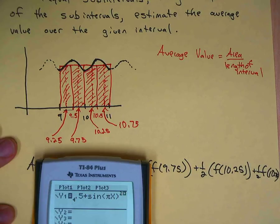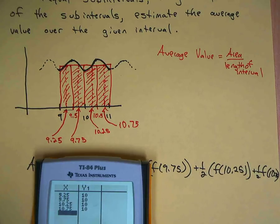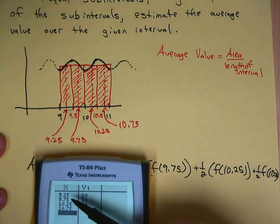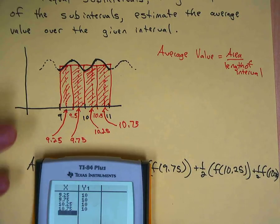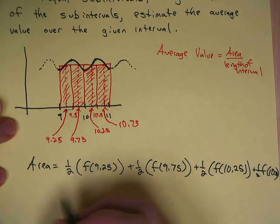So I go to the calculator. Notice I typed in the values 9.25, 9.75, and they're all the same—they're all 10. That means that I have a half times 10, half times 10.